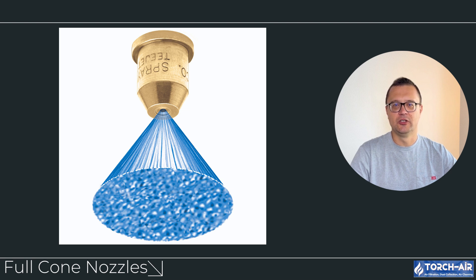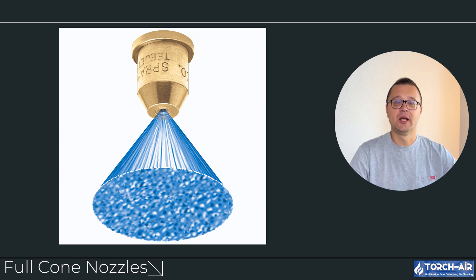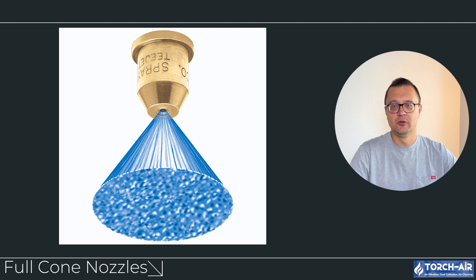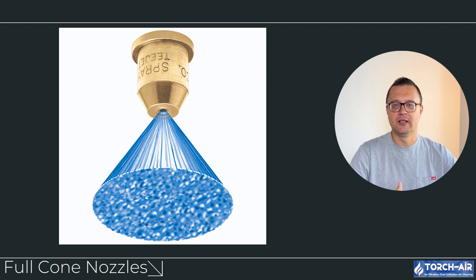Let's explore the most common nozzle types used in scrubbers. Full cone nozzles are designed to spray the scrubbing liquid in a full cone-shaped pattern, creating a uniform distribution of droplets over a large area. These nozzles are highly effective for applications where thorough gas-liquid interaction is needed, and are best for applications requiring high liquid flow rates and uniform droplet distribution. They are excellent for large-scale scrubbing operations, particularly in gas absorption applications like removing sulfur dioxide (SO2) or hydrogen chloride (HCl). Consideration: they require higher pressure to maintain consistent spray patterns, which could lead to increased energy consumption.